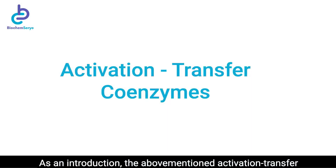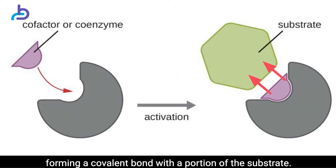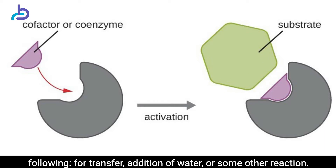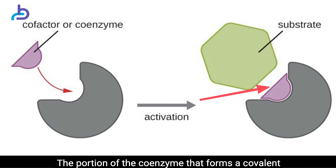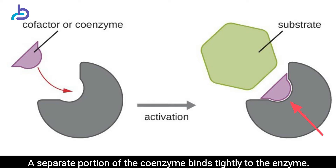As an introduction, the activation transfer coenzymes usually participate directly in catalysis by forming a covalent bond with a portion of the substrate. In turn, the tightly held substrate moiety is then activated for transfer, addition of water, or some other reaction. The portion of the coenzyme that forms a covalent bond with the substrate is its functional group. A separate portion of the coenzyme binds tightly to the enzyme.